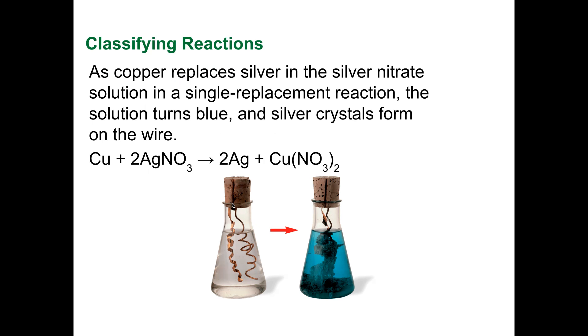Copper replaces silver in silver nitrate solution in a single replacement reaction. The solution turns blue, and the silver crystals form on the wire. Maybe we'll do this as a lab. But basically what's going on here, if you look at the formula, copper replaces the silver. Ag is the silver. So copper and the silver kind of swap places. Make sense?